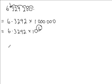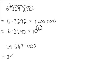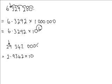So if we apply the same to a different number, we have the number 29,342,000. The number between 1 and 10 comes from the figures in our question, so it's 2.9342. To find the power, we are placing our decimal point between the 2 and the 9. The decimal point in a whole number is at the end, so the number of places between the two is 7. So it's 10 to the power of 7, and the number 29,342,000 is 2.9342 times 10 to the power of 7.